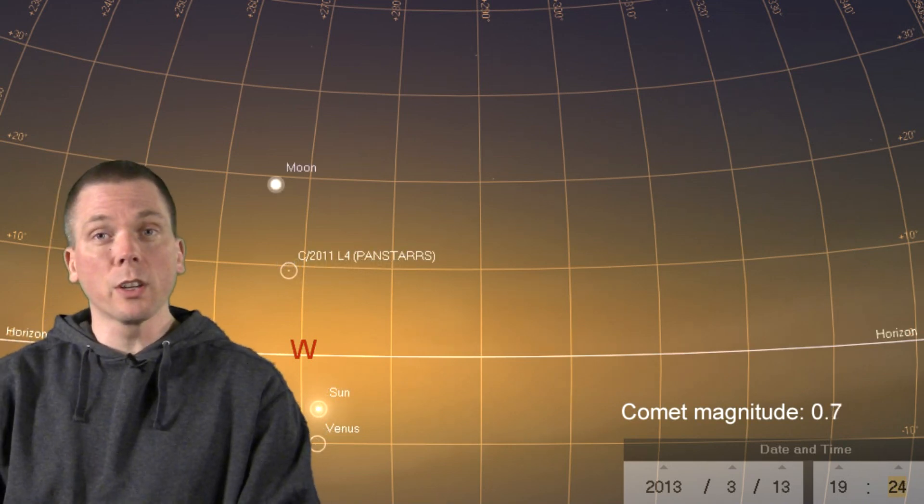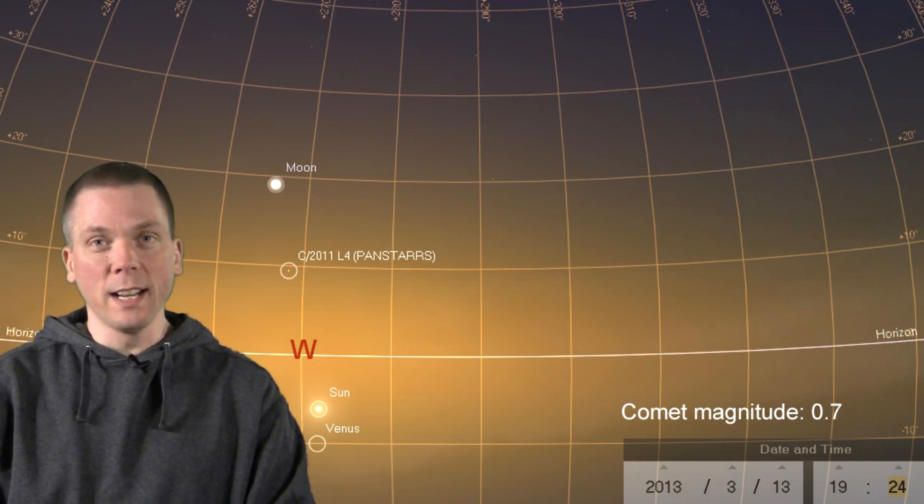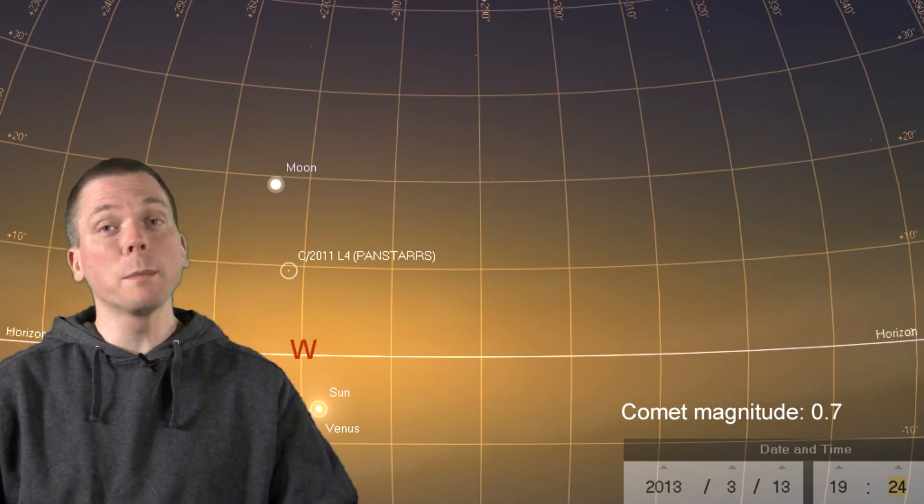On the 13th, the moon will be slightly larger than the crescent, but up above the comet about 10 degrees. Use the glow of the sunset and the moon to help you locate the comet this night, as PanStars is between the two objects.